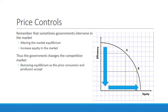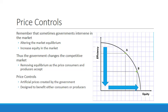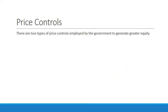The government is changing the competitive market by removing equilibrium as the price consumers and producers accept. Remember, in a perfectly competitive market producers and consumers are accepting whatever the price is — in this case the government is altering what the price is going to be. Price controls are artificial prices created by the government, and they're designed to benefit either consumers or producers. There are two types employed by the government to generate greater equality.